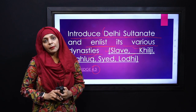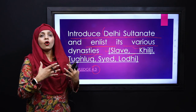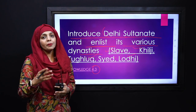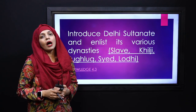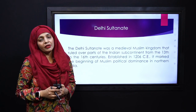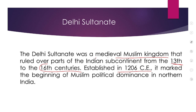My dear students, Delhi Sultanate ke baare mein hum ne aaj parna hai. Basically, Delhi Sultanate joh hai, yeh mid-evil Muslim kingdom joh hai, uska ek daur tha, aur ismein koji ek ruler nahi tha, ya koji ek dynasty nahi thi — ismein multiple dynasties aayin, aur yeh takreeben 13th se 16th century tak inho ne hakumat ki. Established in 1206 CE, it marked the beginning of Muslim political dominance in Northern India.